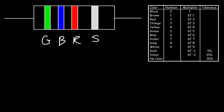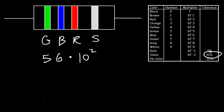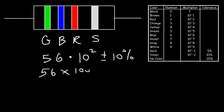The first color is associated with the first digit — green has a number of five. Next we have blue, which is associated with six; that's the second digit. The third color is for the multiplier, and since we have red, the multiplier for red is ten squared — ten to the second power. For silver, the tolerance is ten percent, so it's plus or minus ten percent. Ten squared, or ten times ten, is a hundred. So 56 times a hundred is fifty-six hundred ohms plus or minus ten percent.